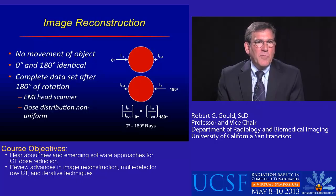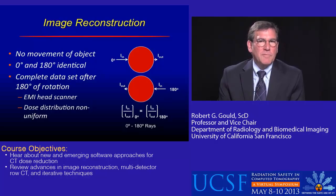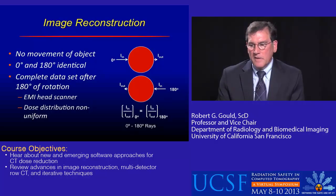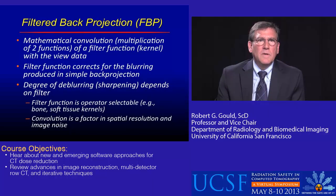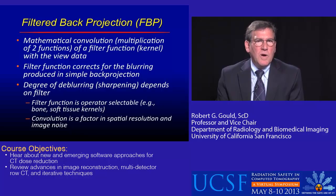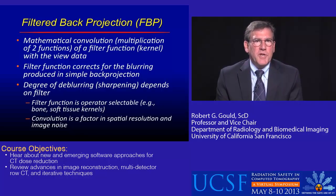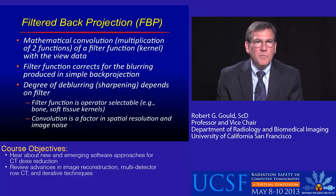If we only went 180 degrees, it would produce a non-uniform dose distribution — one side of the head or object would be irradiated to a greater extent than the other. The way machines do the reconstruction is what's called filtered back projection, which is a convolution involving multiplication of two functions.